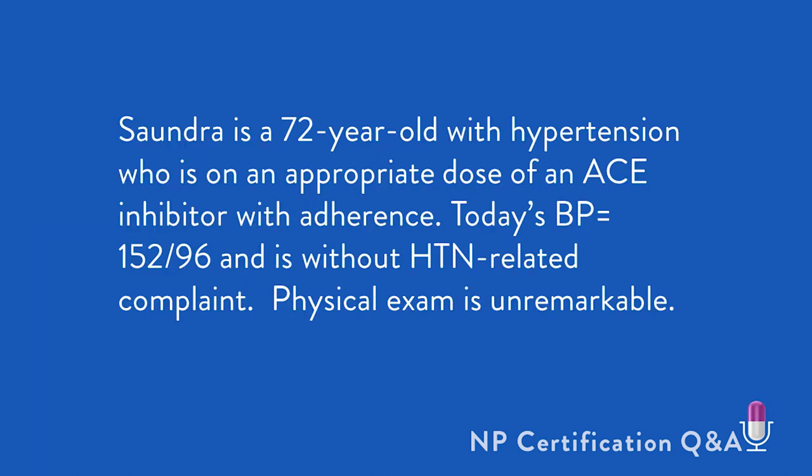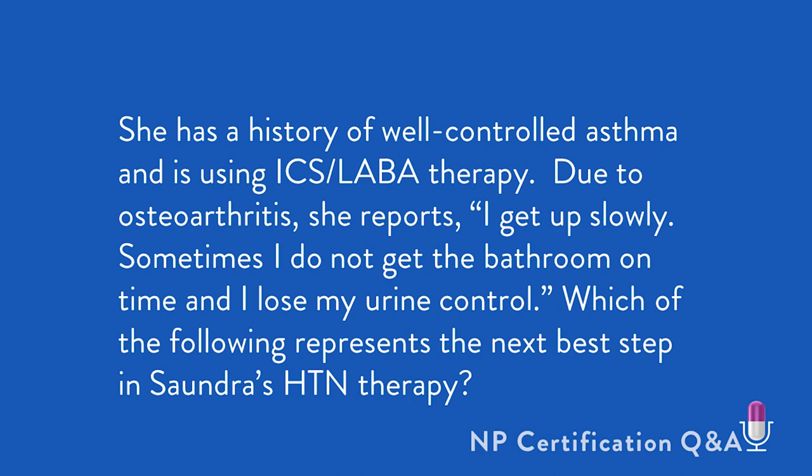Sondra is a 72-year-old with hypertension who's on an appropriate dose of an ACE inhibitor with adherence. Today's blood pressure is 152 over 96, and she is without hypertension-related complaints. Physical exam is unremarkable. She has a history of well-controlled asthma and is using ICS-LABA therapy. Due to osteoarthritis, she reports: 'I get up slowly, sometimes I don't get to the bathroom on time, and I lose my urine control.'